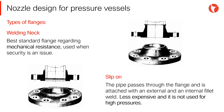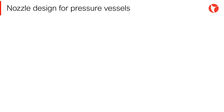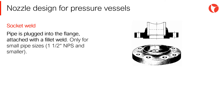Slip-on flange: the pipe passes through the flange and it is attached with an external and internal fillet weld. This type is less expensive than the previous and it is not used for high pressures. Socket weld flange is often used only for small pipe sizes — one and a half inches nominal pipe size and smaller.